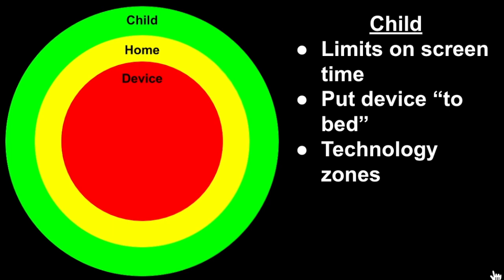We've also created technology zones — places where our boys can use technology and places where they can't. For schooling, they're allowed to use their school computers in their rooms as long as the door is open, since that's where their desk is for taking notes during video lectures. But when they're on their own devices like tablets, they need to be out in the family room or our extra back room. No TVs, no gaming systems in their rooms — everything is in a family area.